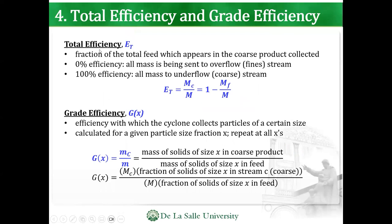To solve for total efficiency, it's basically MC over M, or 1 minus MF over M. For grade efficiency, it's the efficiency with which the cyclone collects particles of certain sizes. Calculate it for a given particle size fraction X and repeat at all X values — basically, mass of solids of size X in the coarse product divided by mass of solids of size X in the feed.